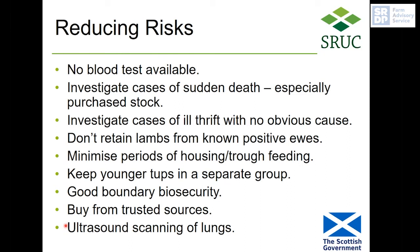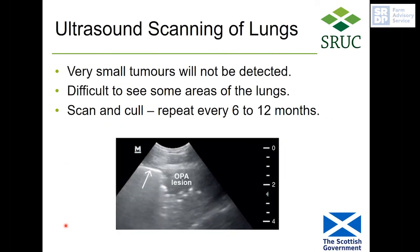Something that has become more common in recent years is using an ultrasound scanner to examine the lungs for tumours. It's not a perfect test — very small tumours may be too small to detect at an early stage, and it can be difficult to visualise all lung areas. In flocks where OPA is causing significant issues, some have implemented a programme of scanning every sheep every 6 to 12 months and culling positive cases. This picture shows an ultrasound scan with the tumour visible.